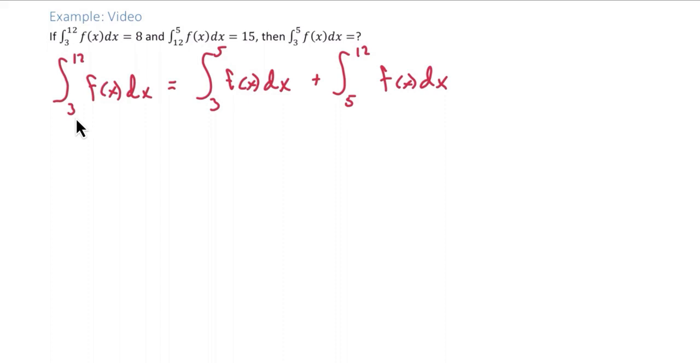In the first integral, we are explicitly given its value as 8. The second integral, the integral from 3 to 5, is actually what we're looking for. So we can think of that as our unknown x.